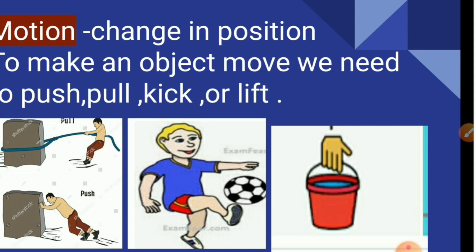We have already studied about motion in junior classes. We know that an object moving in a straight line is said to be in motion if it changes its position with respect to its surroundings. What is motion? When any object changes its position, we will say that it is in motion.